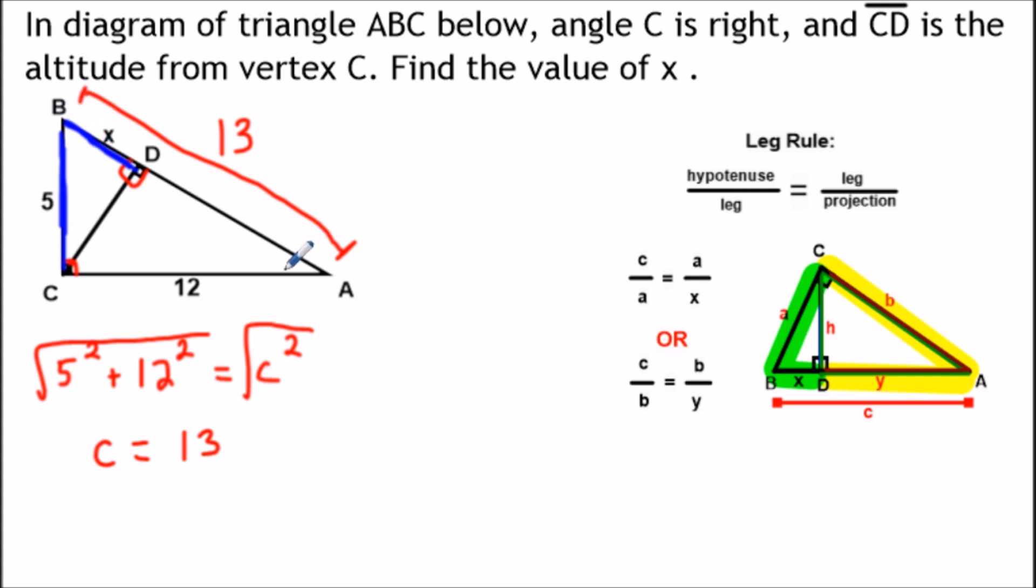If you want to use the letter form here, we're going to be using the formula C over A equals A over X. But if you want to use the verbal representation, the hypotenuse is C over the leg A is equal to the leg A over the projection, which is X, the segment BD.